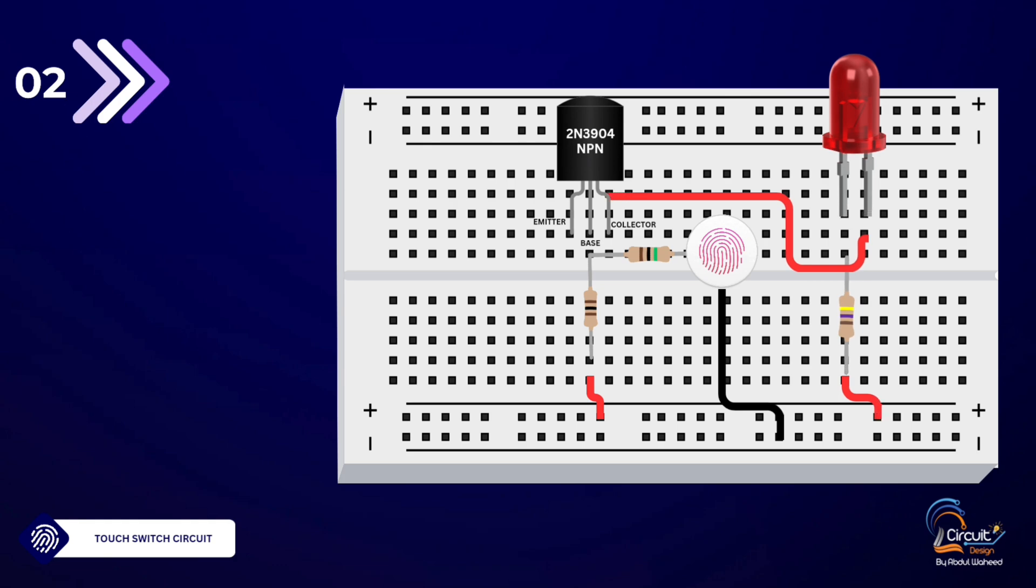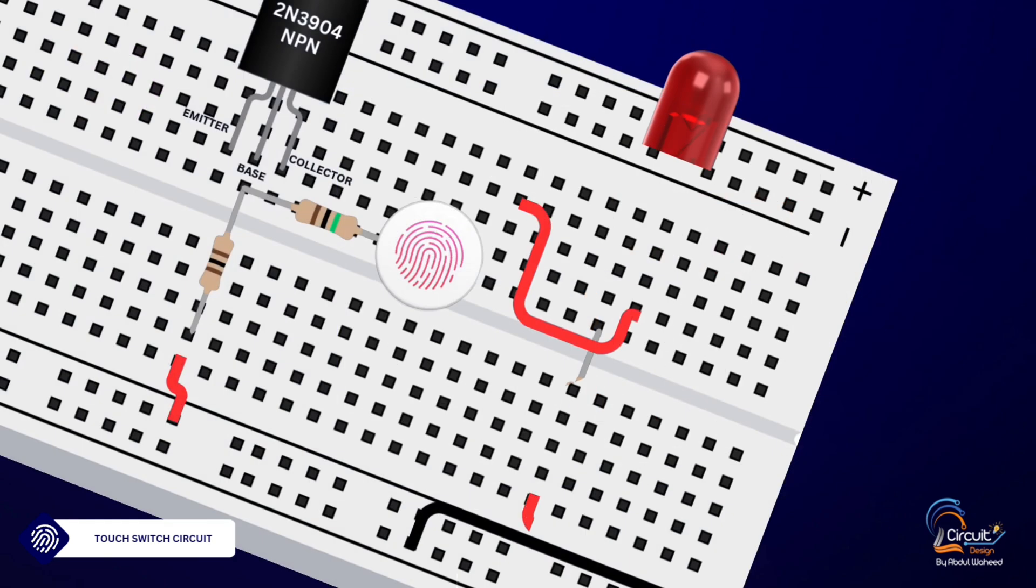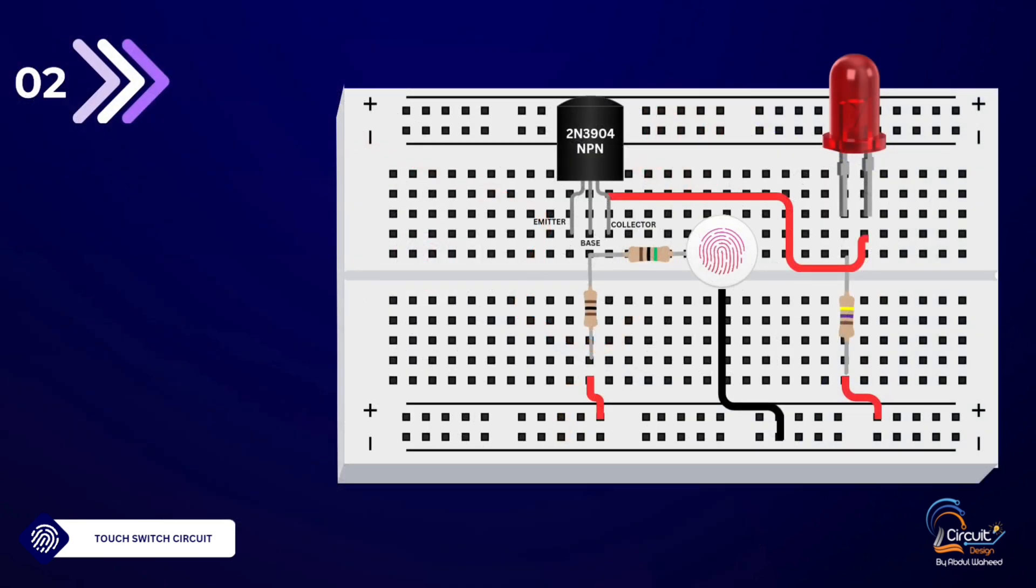Step 4: Setting up the LED. Connect the anode (long leg) of the LED to the Collector (C) of the transistor. Connect the 470 ohm resistor from the cathode (short leg) of the LED to the positive rail (VCC).